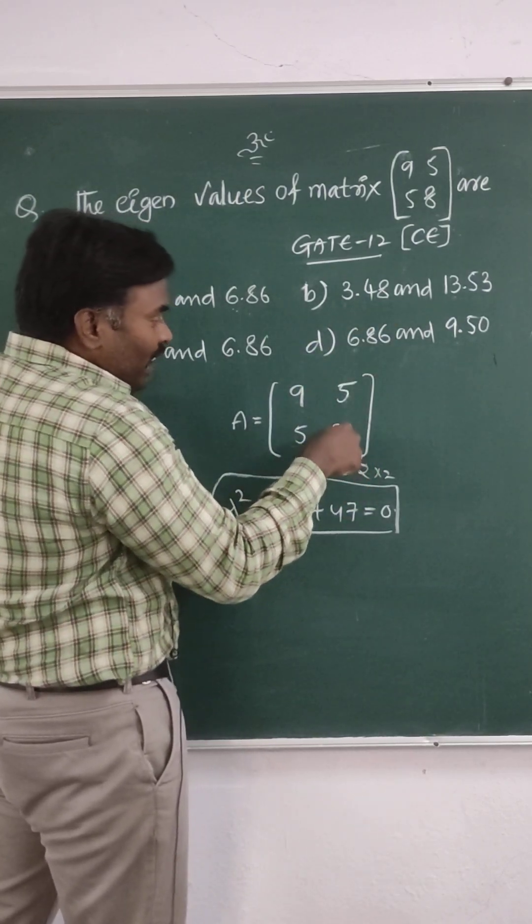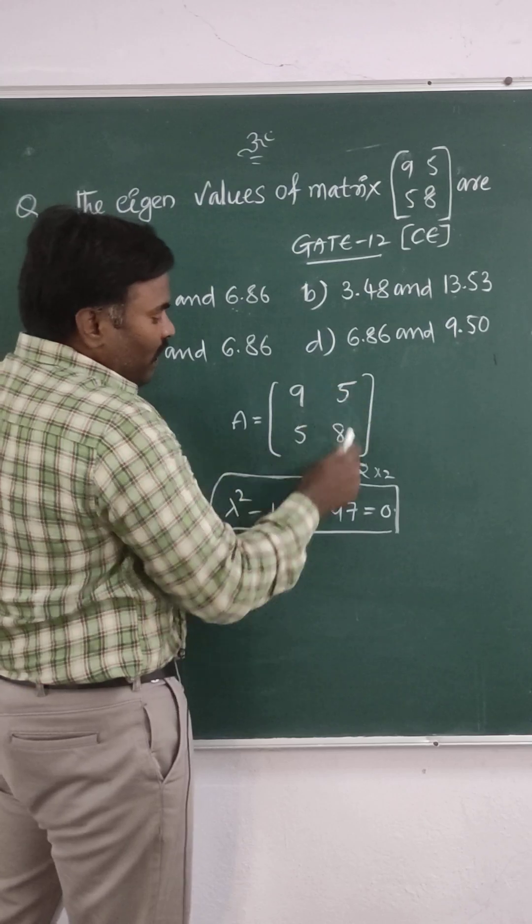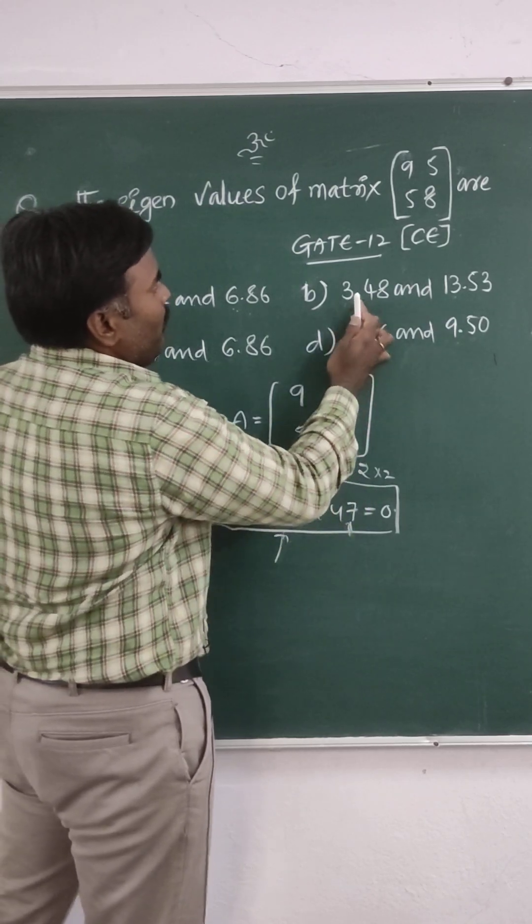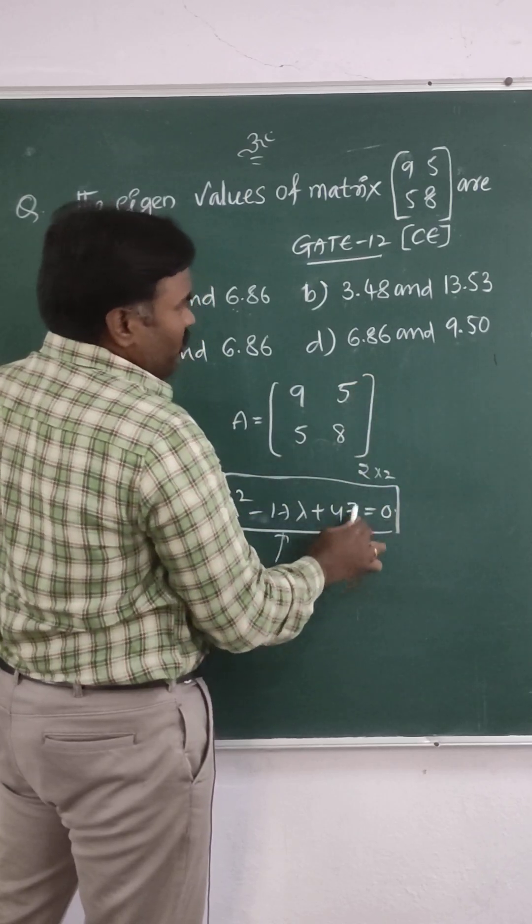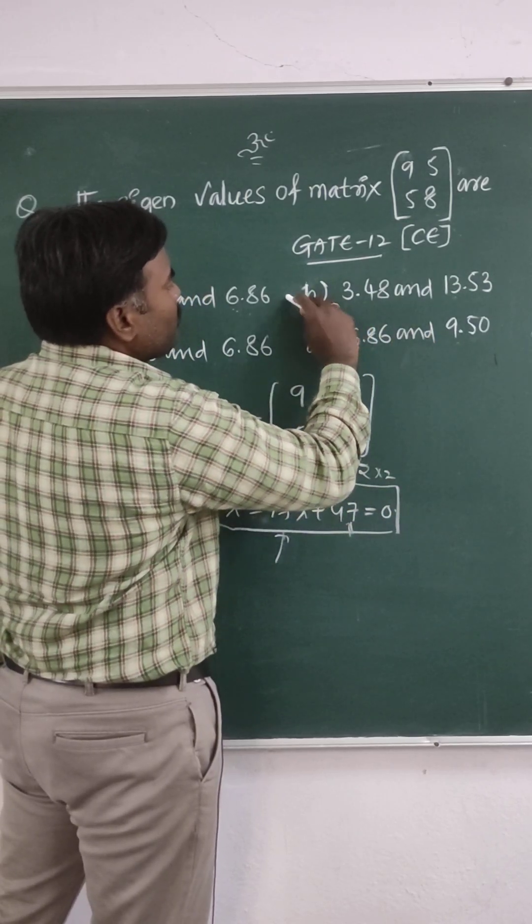Product of the eigenvalues is determinant of A. Determinant is 47 here. Product is 6 nines, so this is not equal to 47. This is bigger than 47. So option B is correct.